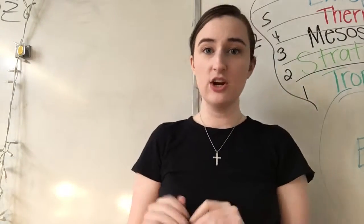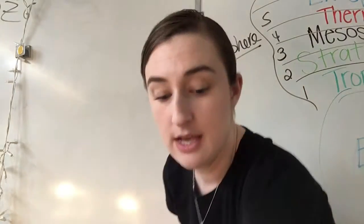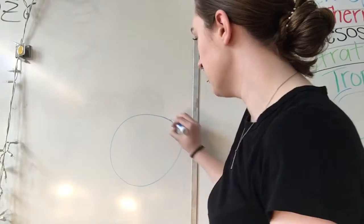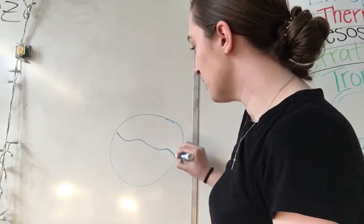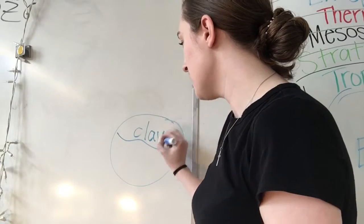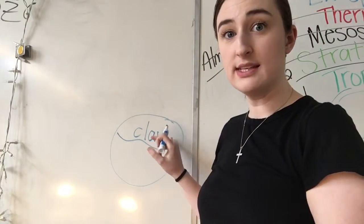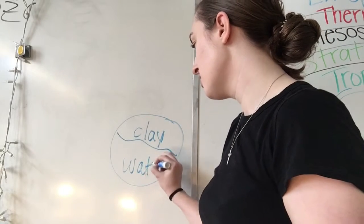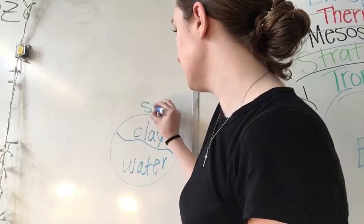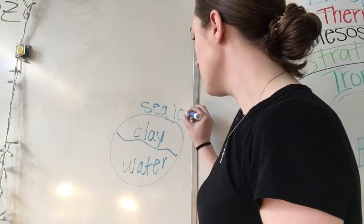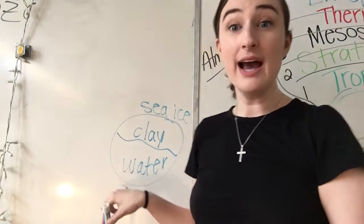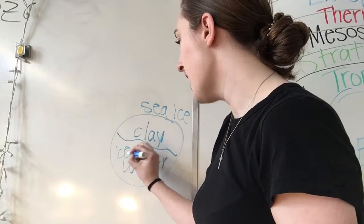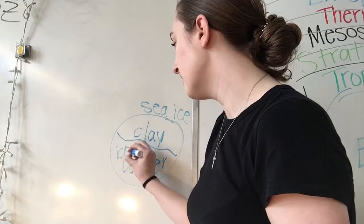The sea ice container is going to be set up like this. We are going to have a container — half of it is going to be clay, so you're going to put clay on one of the sides. Then you're going to fill the other side with water. This is the sea ice side — you're also going to put ice in this water, so ice plus water. You do not need a lot of ice.